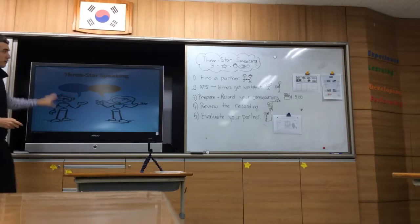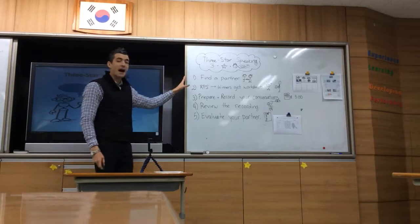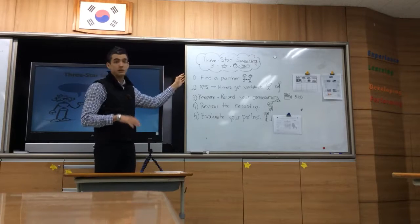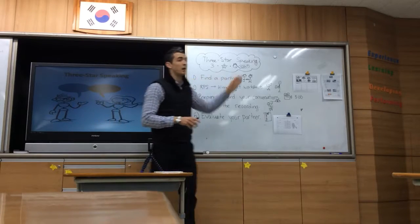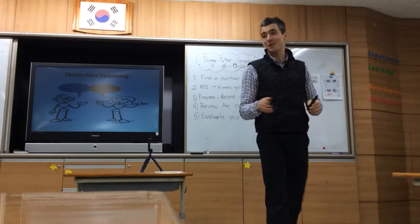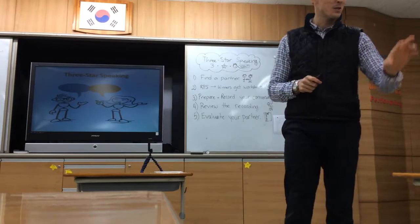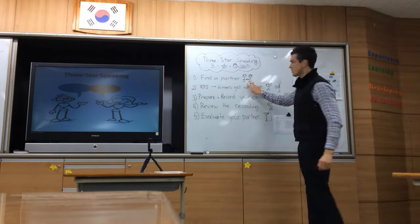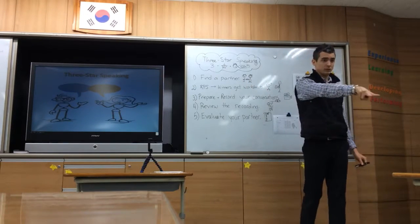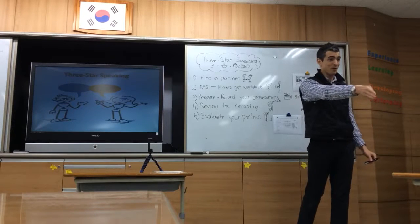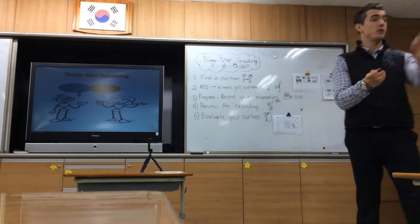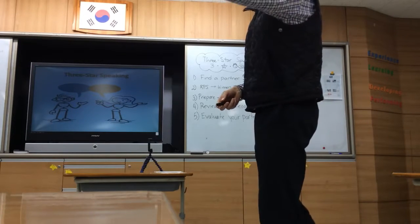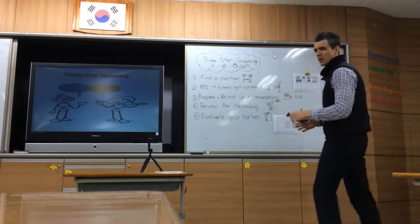In three-star speaking, you have to do five different things. The first one, number one, is find a partner. Today, finding a partner is easy — this will be the person you are sitting next to. So how many partners are there? Two people. You two are partners, and you two are partners, same for everyone. Step one is easy.